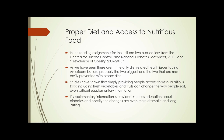Also included are issues with joints caused by obesity, requiring knee or hip replacement. In the reading assignments for this unit are two publications from the Centers for Disease Control: the National Diabetes Fact Sheet 2011 and the Prevalence of Obesity 2009–2010. These aren't the only diet-related health issues facing Americans, but they are probably the two biggest and the two most easily prevented with proper diet.